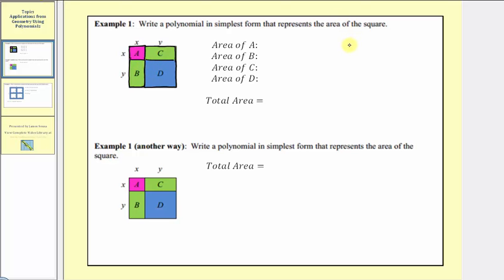Before we begin, for review: if we have a rectangle with dimensions l by w, then the area is equal to l times w. And if we have a square with dimensions s by s, then the area is equal to s times s, or s squared.